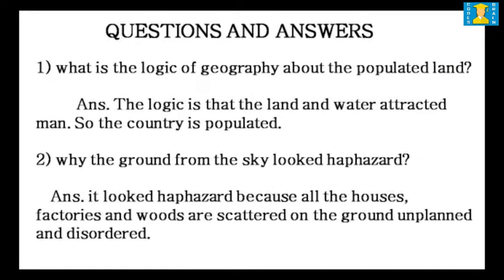Questions and answers. The first question from this lesson is: What is the logic of geography about the populated land? The answer is: the logic is that the land and water attracted man, so the country is populated. Question number two: Why did the ground from the sky look haphazard? The answer is: it looked haphazard because all the houses, factories and woods are scattered on the ground, unplanned and disordered.